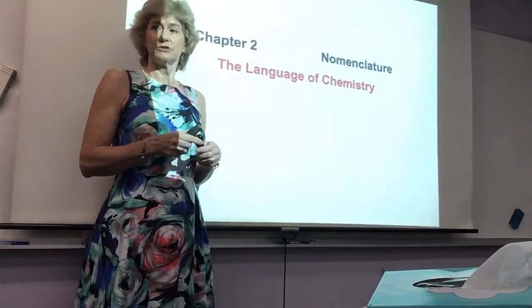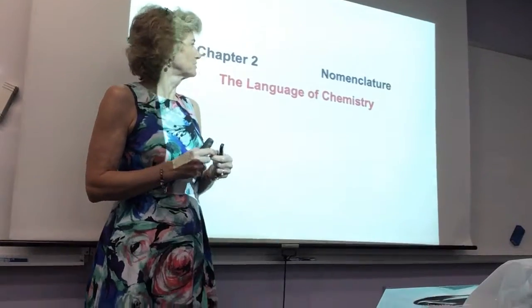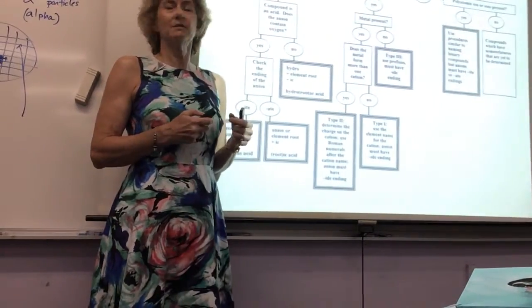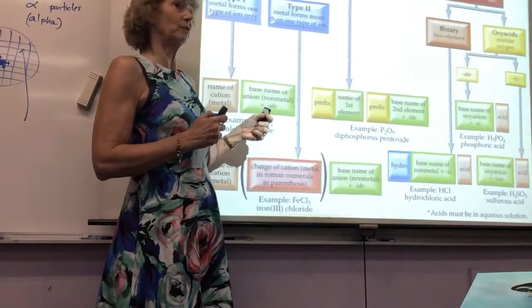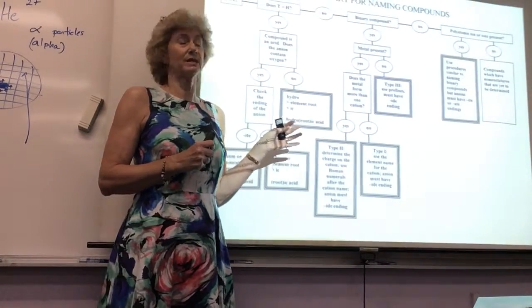So this is our next topic, nomenclature. Oh, it's not chapter 2. Sorry, I've got to change this. This is just naming things in chemistry. I have two flowcharts. I have a colorful one, it's so pretty, and I have a more comprehensive one but not colorful. This one is the one we'll use because it's more comprehensive.